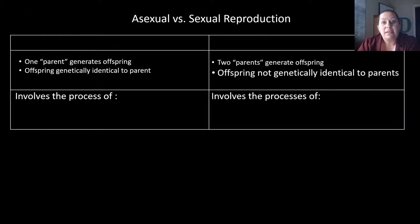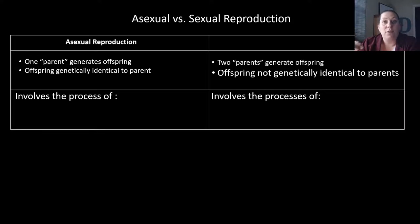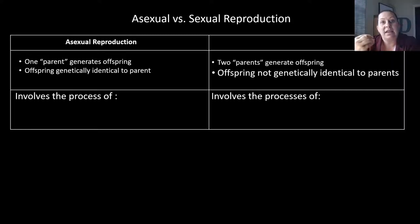Asexual reproduction and sexual reproduction are a little different. Asexual reproduction means there's one parent, they generate the offspring, and these offspring are genetically identical — not only genetically identical to each other, but also genetically identical to the parent.